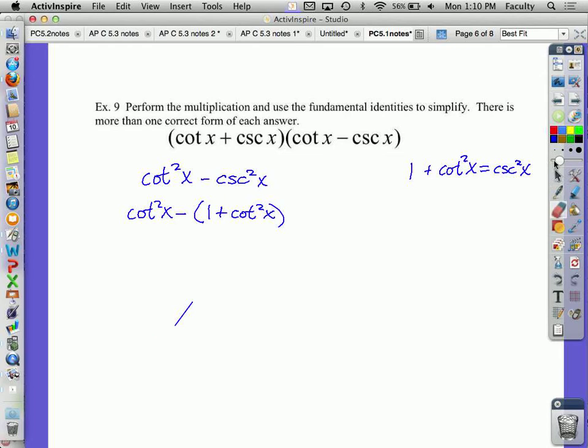And something I want you to notice is that if I am replacing cosecant squared x with a sum or difference, I need to subtract the entire sum or difference, so that's why I have parentheses there. So I have cotangent squared x minus 1 minus cotangent squared x. The cotangent squared x's cancel, and I have negative 1.